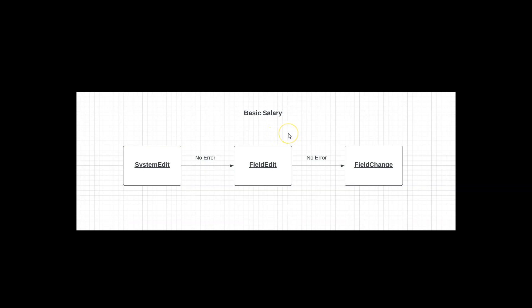To summarize the discussion regarding FieldEdit and FieldChange: if we have written business logic in both FieldEdit and FieldChange for the same field, the sequence of execution is as follows. As soon as the field value is changed and the user tabs out, first it goes through SystemEdits. If there are no errors, it executes the PeopleCode in FieldEdit. If there are no further errors, it moves to FieldChange and executes that PeopleCode. However, at any stage, if there are errors, execution is halted. If there are errors in SystemEdit, FieldEdit PeopleCode will not execute; if there are errors in FieldEdit, the FieldChange PeopleCode will not execute.